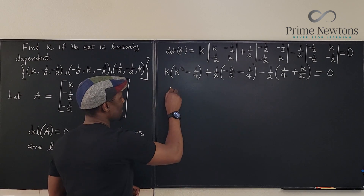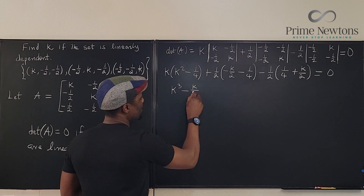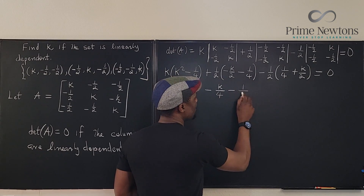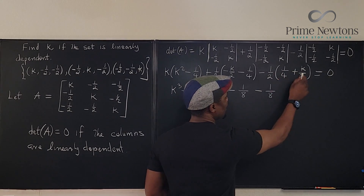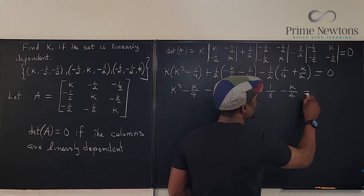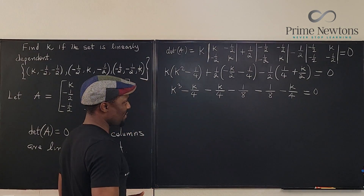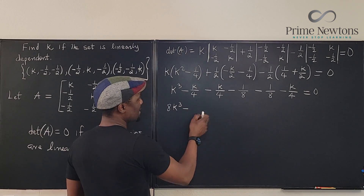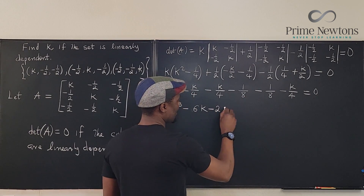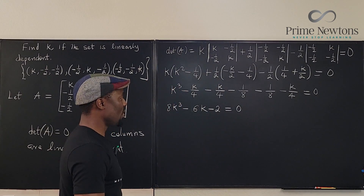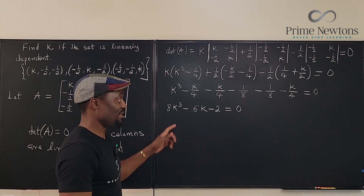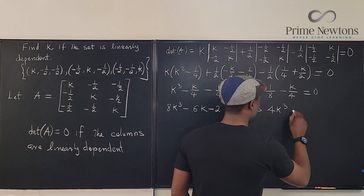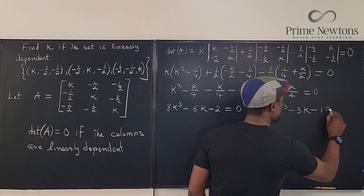Nothing is cancelling, so multiply everything by eight: that gives 8k cubed minus 2k minus 2k minus 1 minus 1 minus 2k equals zero, simplifying to 8k cubed minus 6k minus 2 equals zero. Dividing everything by two gives four k cubed minus three k minus one equals zero.